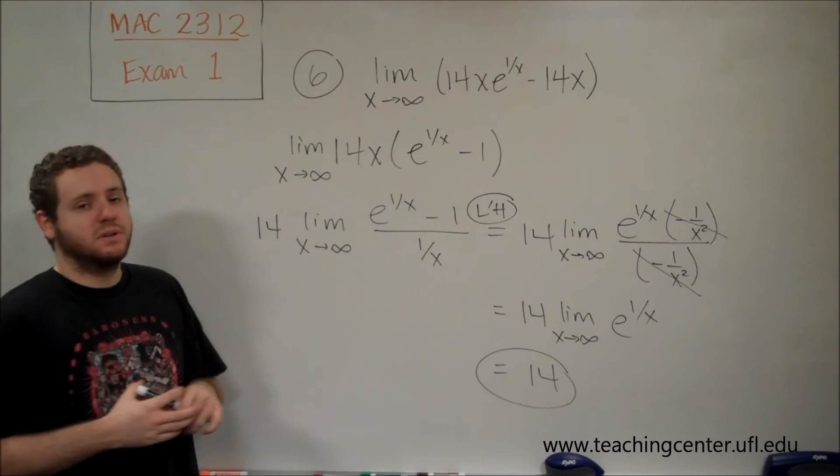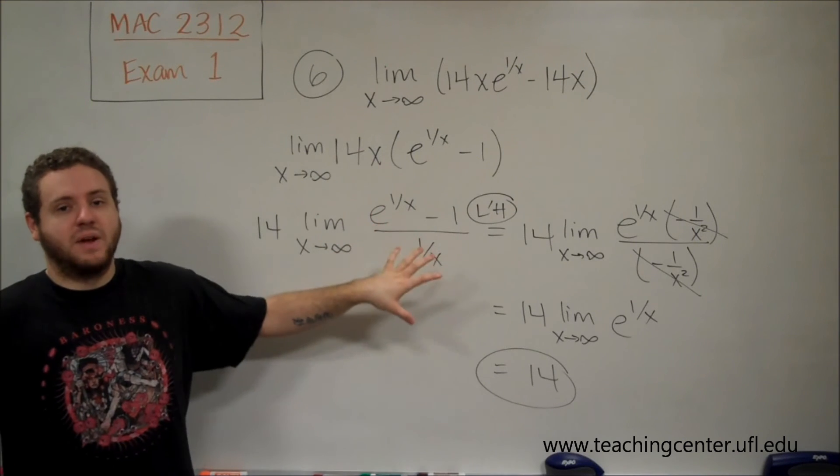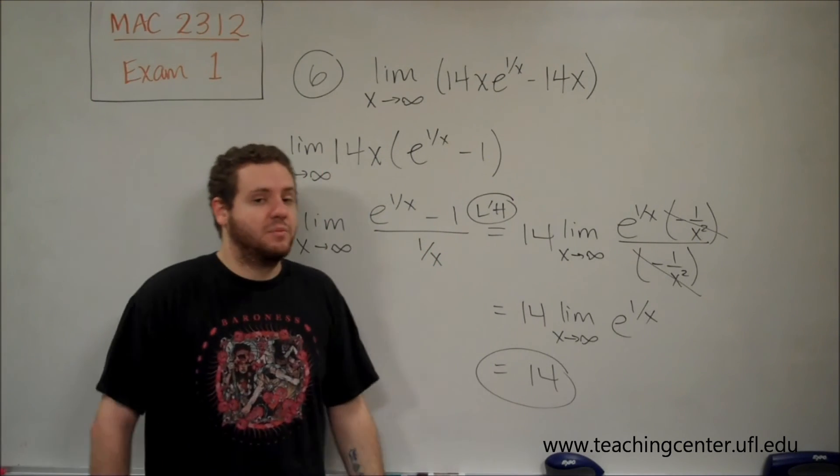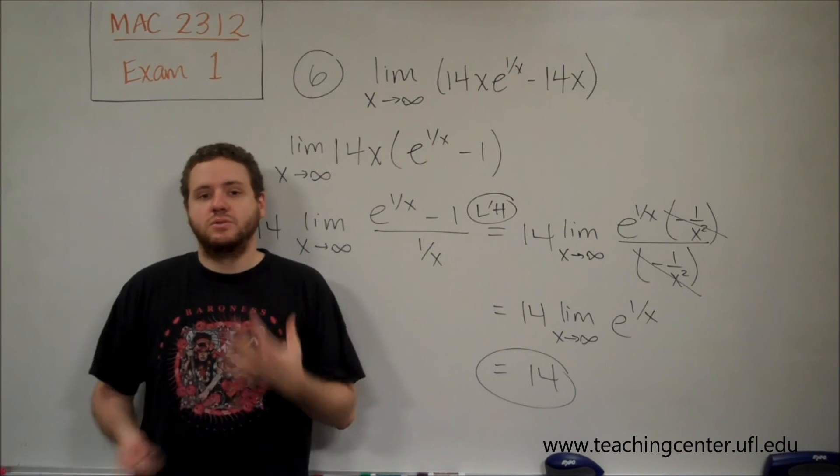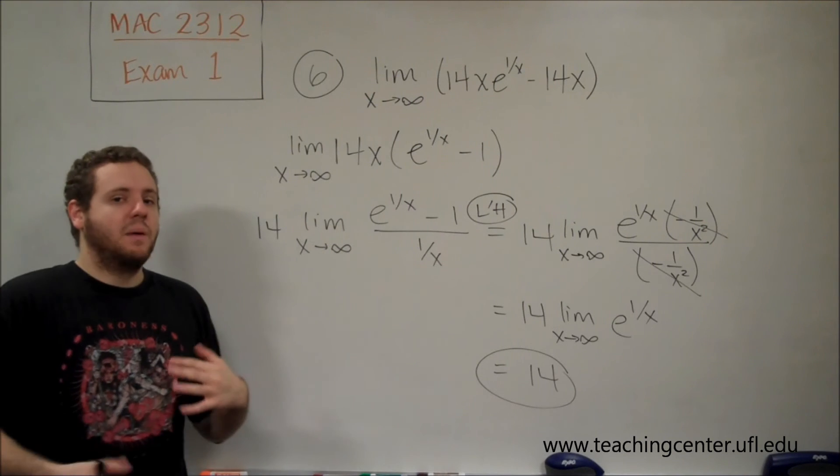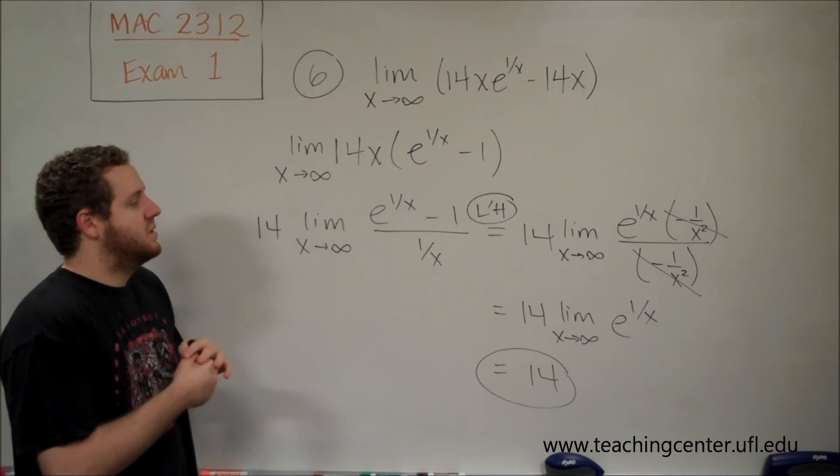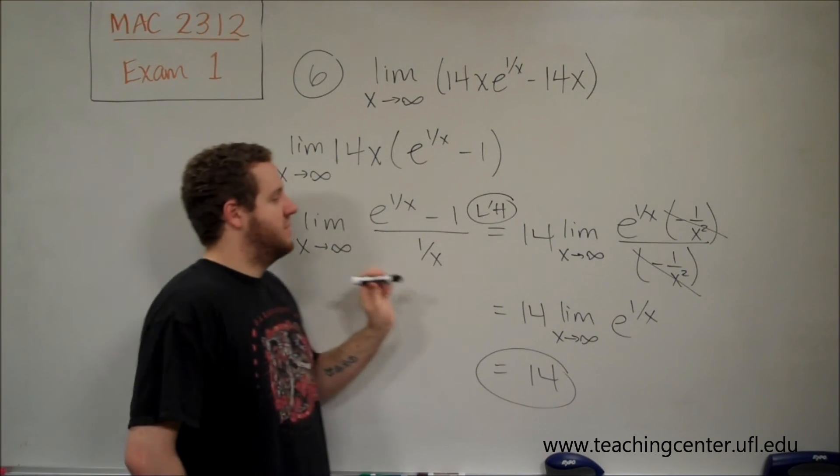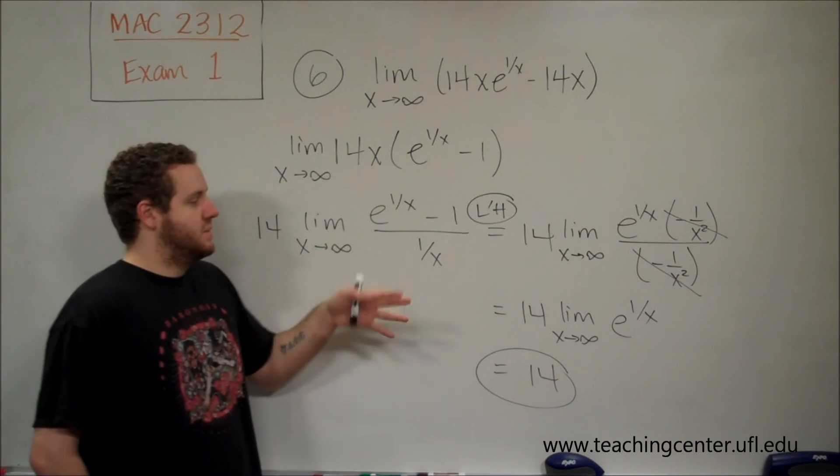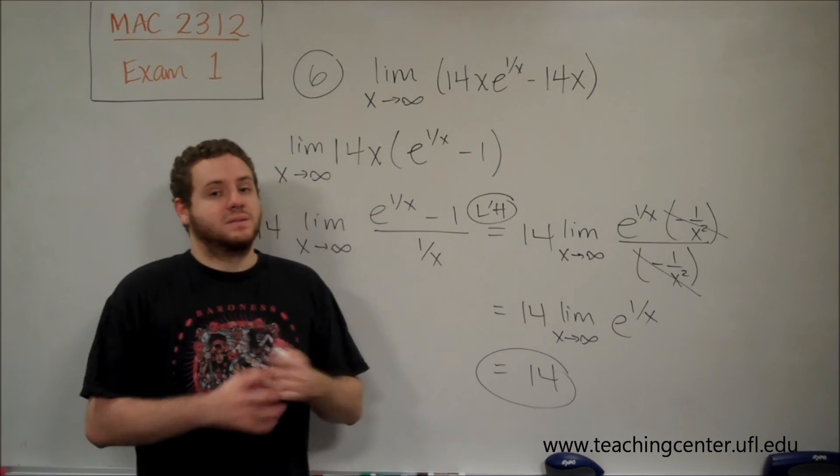Remember that to use L'Hôpital's rule, you have to have the function as a fraction. If it's not already a fraction, usually just put the reciprocal of one of the terms in the denominator. When you apply L'Hôpital's rule, you're taking the derivative of the top and the derivative of the bottom, not the derivative of the function as a whole. Those limits are always equal, as long as it was indeterminate to start with.